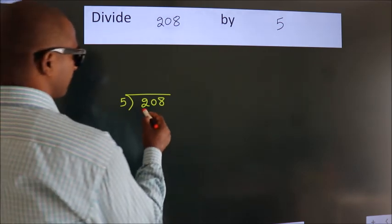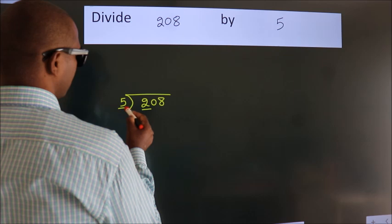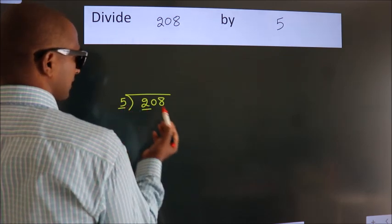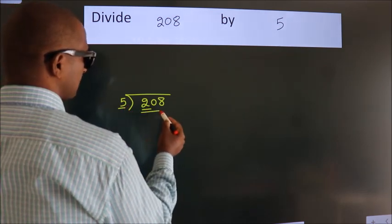Next, here we have 2, here 5. 2 is smaller than 5, so we should take 2 numbers, 20.